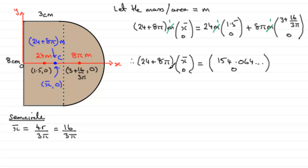So when it comes to working out what x bar is, we know y bar is going to be 0. But x bar is going to equal 154.064 and so on, divided by 24 + 8π. Now, if you do that on your calculator, you end up with 3.1356 and so on. And we'd better round this to some degree of accuracy, let's say one decimal place. So it's going to be 3.1 units, well in this case centimeters, to one decimal place.